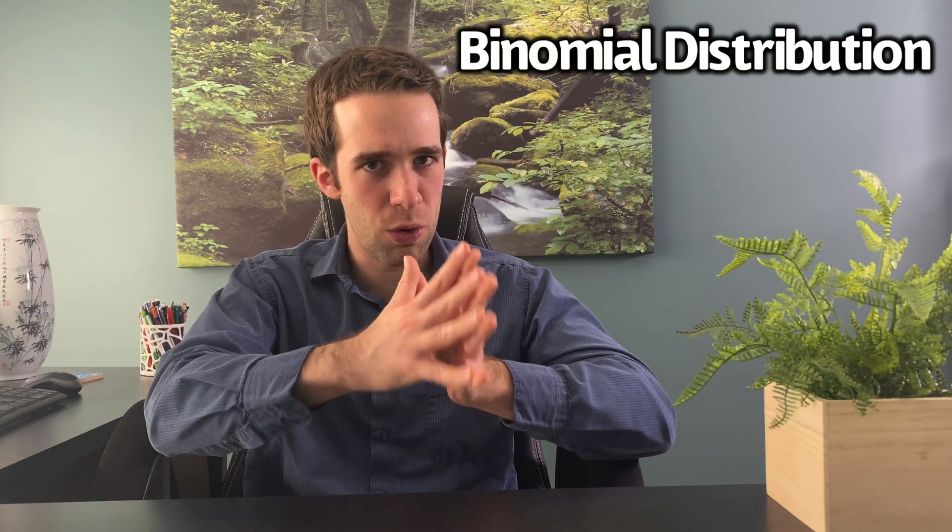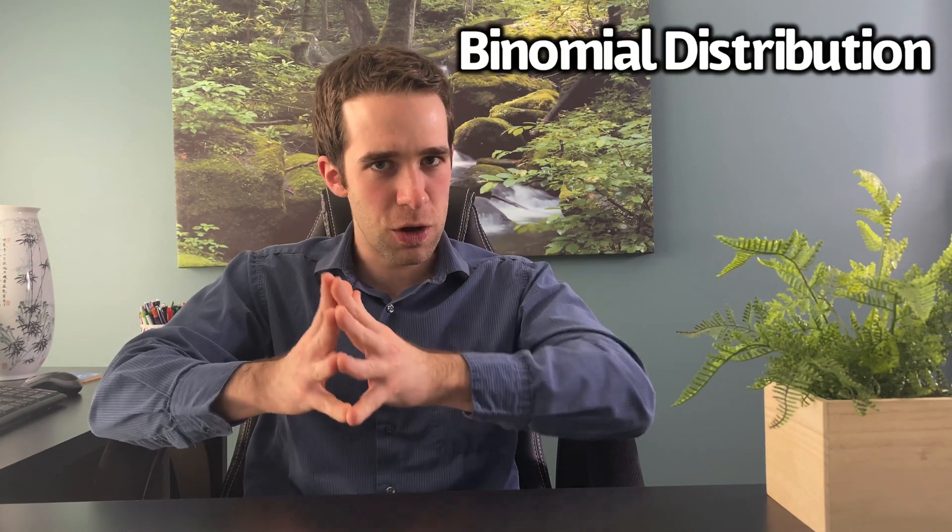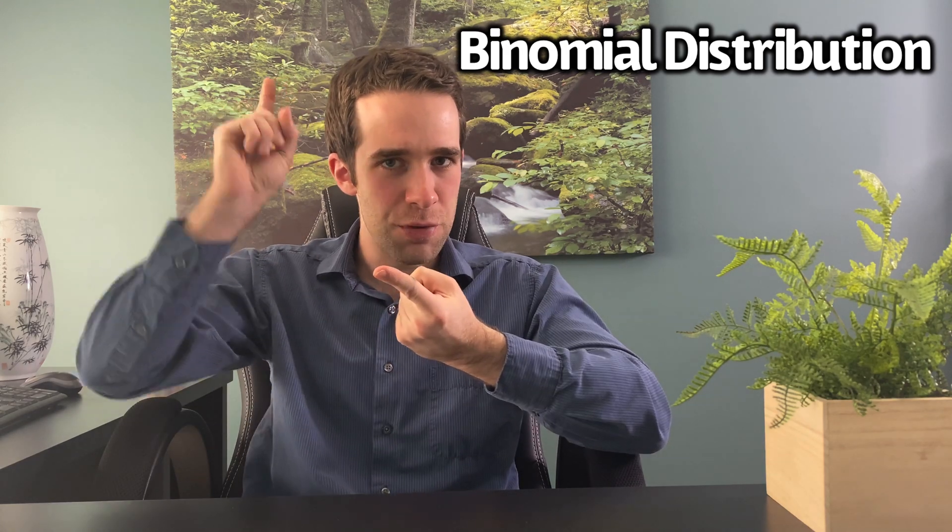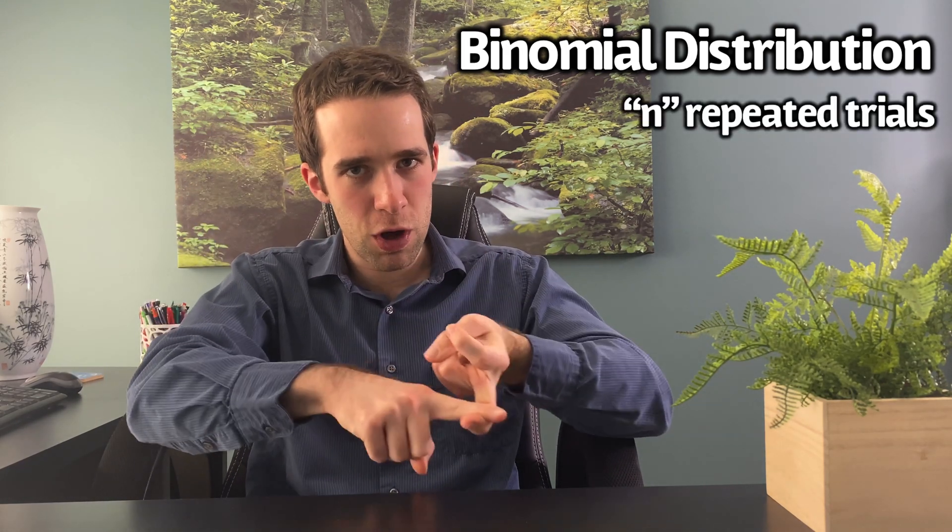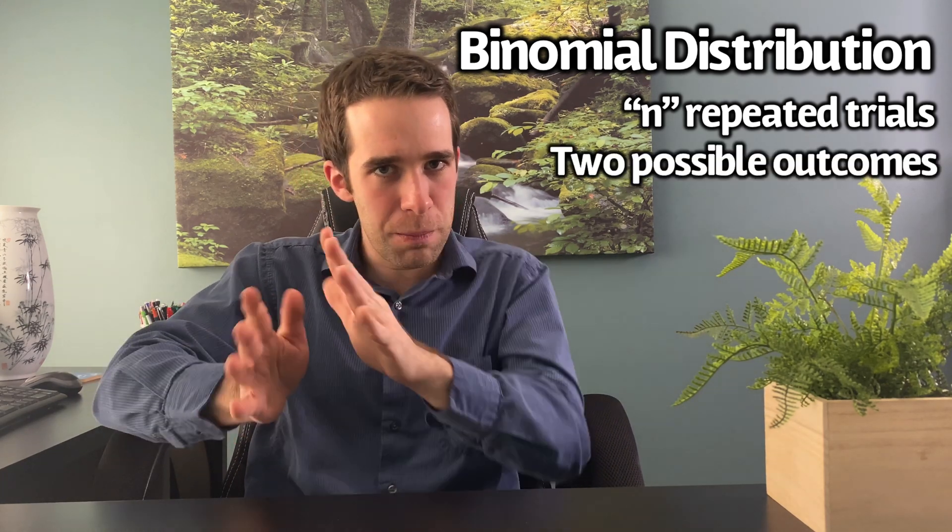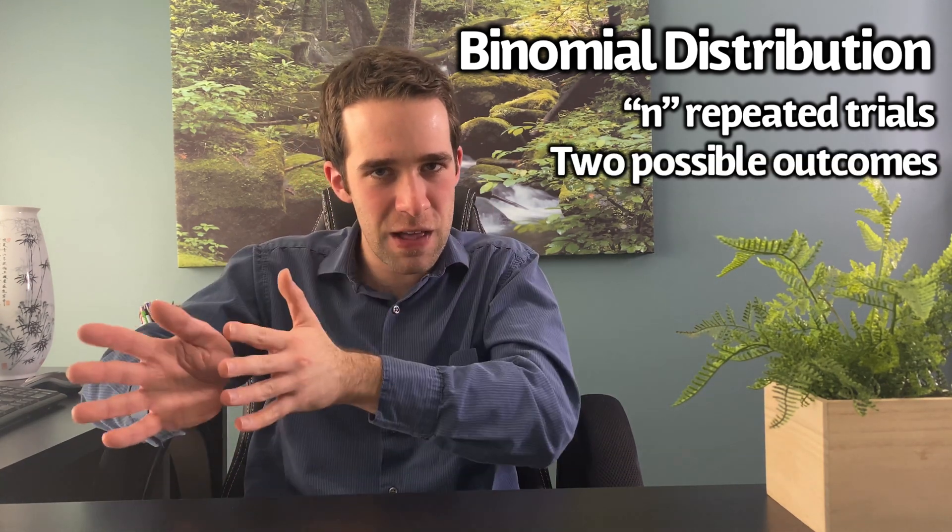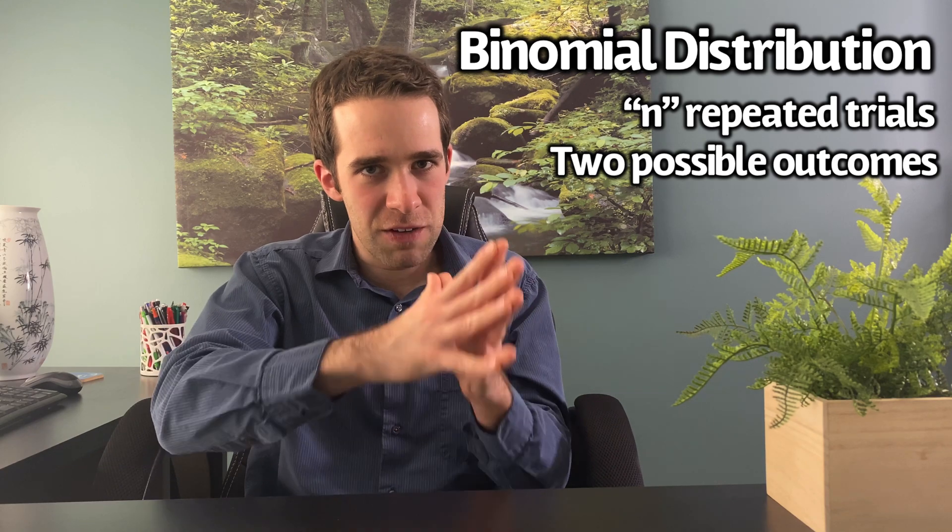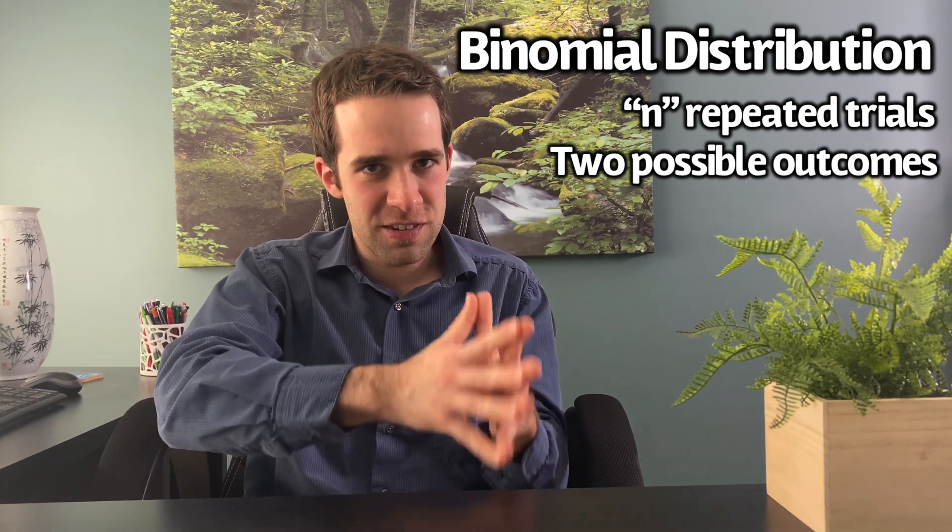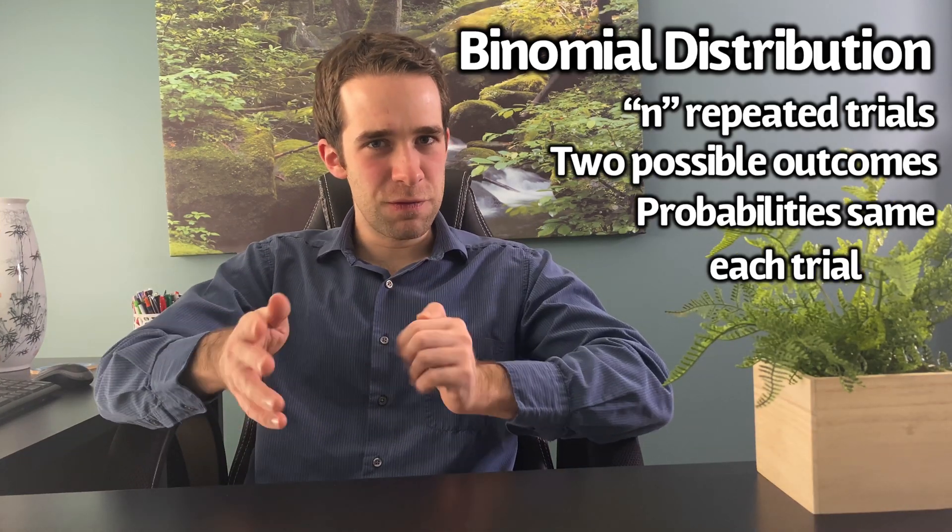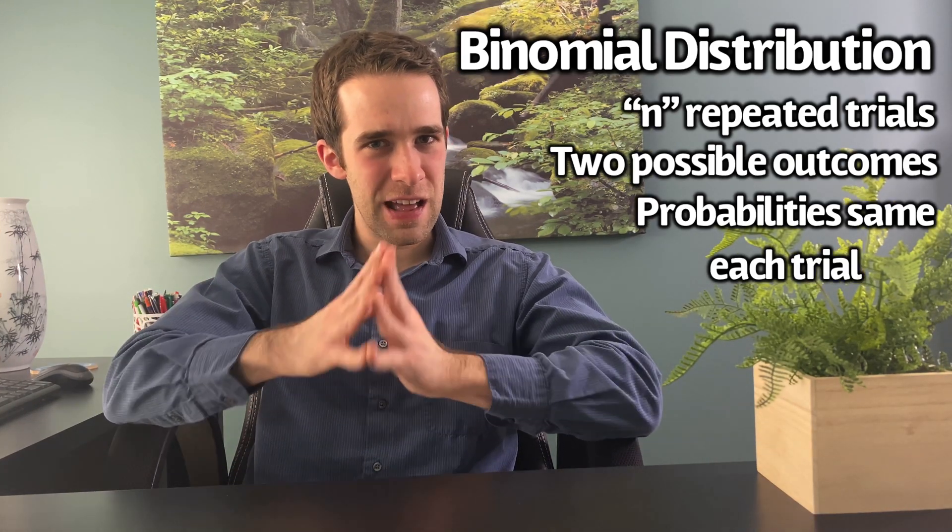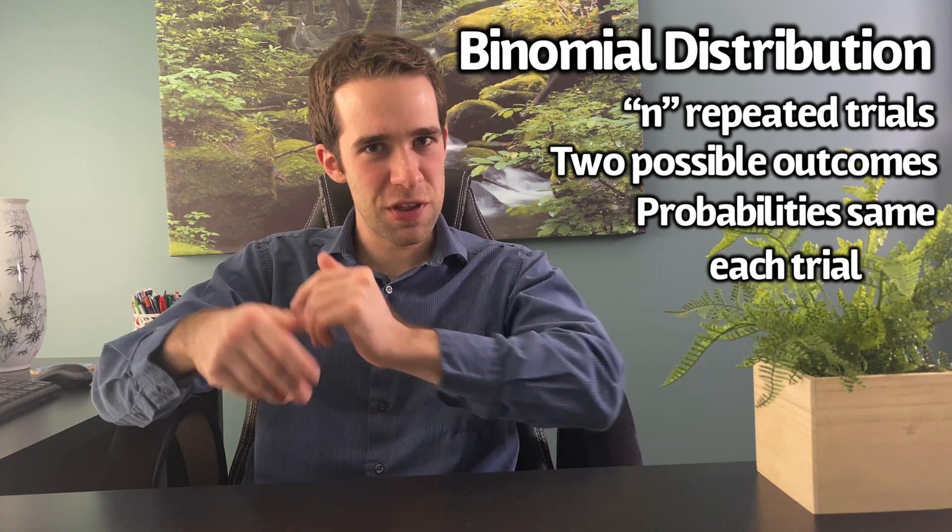The binomial distribution can show up when we have the following circumstances: we need to have repeated trials, we need to have two possible outcomes at each trial, and we'll typically call those success and failure, and the probability of success and failure are the same on each and every single trial. Now that all may seem a little bit confusing or abstract, so we're going to illustrate the binomial distribution with an example.